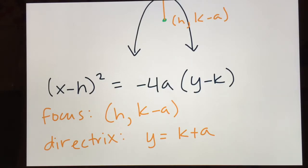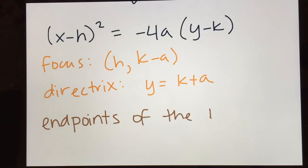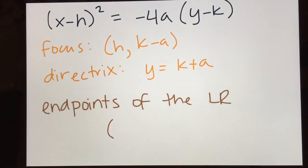For the endpoints of the latus rectum of a downward-opening parabola, here's the latus rectum right here. I just need to take the focus and go left 2a and right 2a. So the endpoints of the latus rectum are the focus moved left 2a and right 2a.